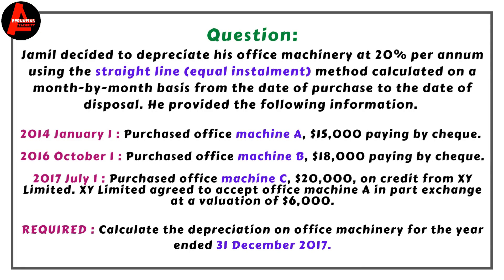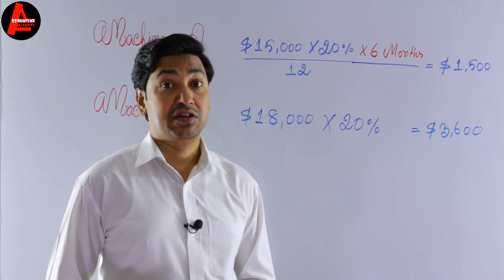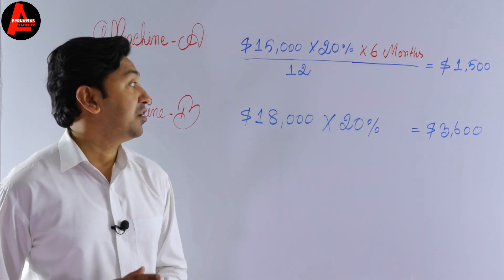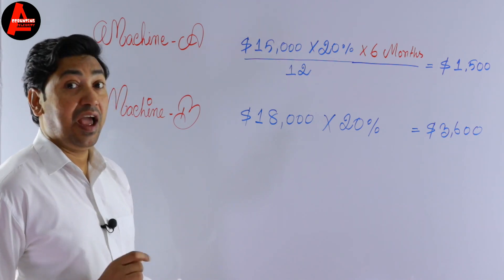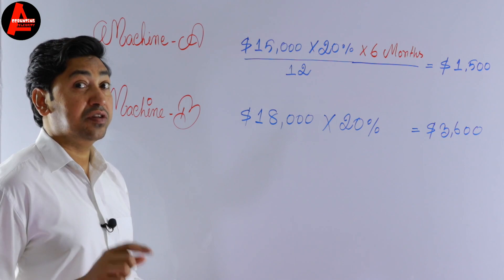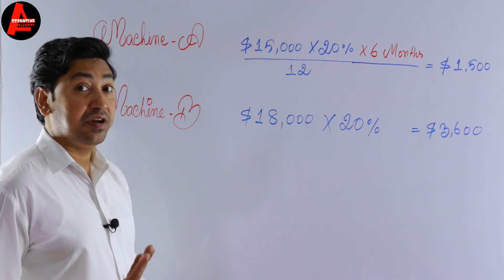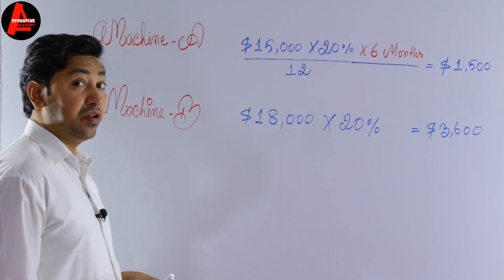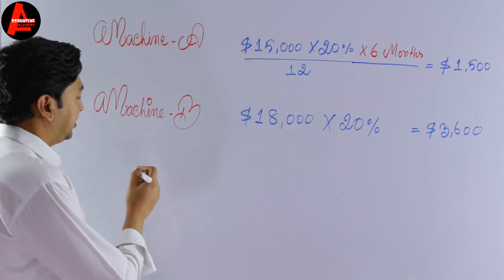Now for Machine C. Machine C was purchased on 1st July 2017 for $20,000 on credit from XY Limited. The $6,000 part-exchange value of Machine A is additional transaction information and is not used in the depreciation calculation. Machine C was purchased in July 2017, so depreciation runs from July to December — six months.